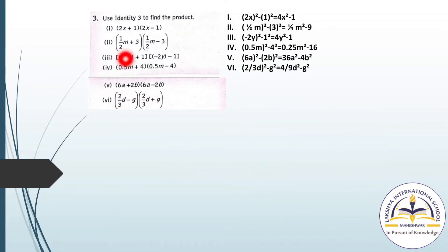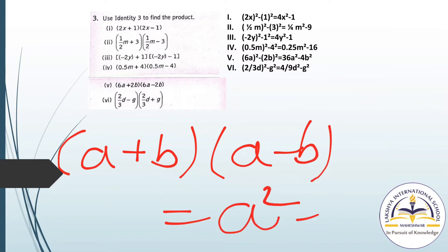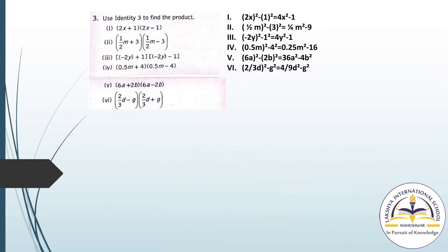Now use Identity 3 to find the product. (2X + 1) and (2X - 1). We know that (A + B)(A - B) equals A square minus B square. Applying the identity: (2X)² minus 1 square, which gives 4X square minus 1.